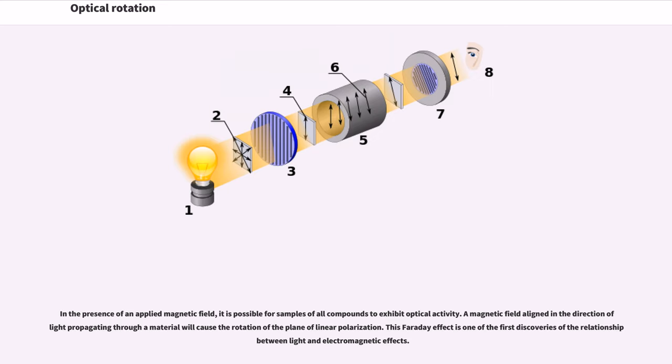In the presence of an applied magnetic field, it is possible for samples of all compounds to exhibit optical activity. A magnetic field aligned in the direction of light propagating through a material will cause the rotation of the plane of linear polarization. This Faraday effect is one of the first discoveries of the relationship between light and electromagnetic effects.